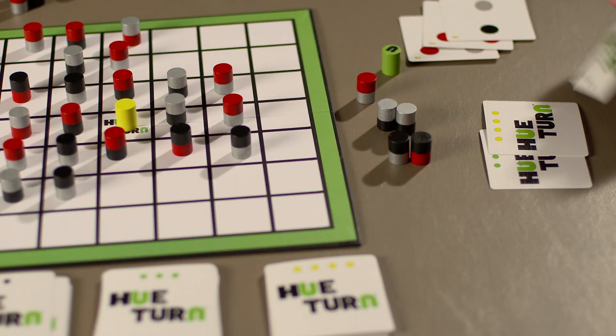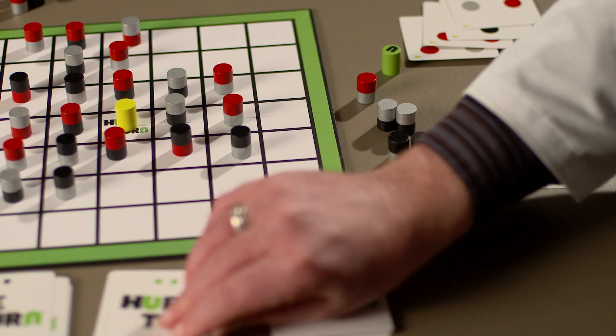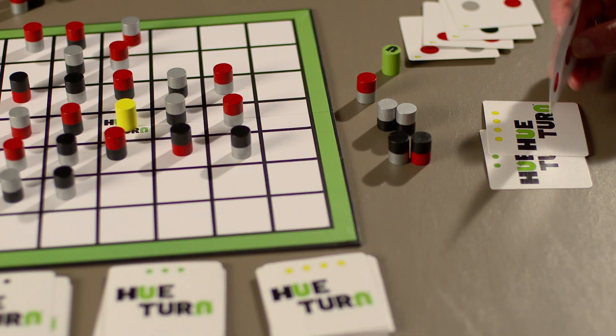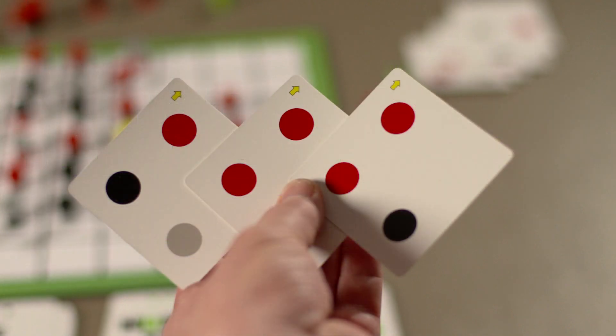At the end of your turn, refill your hand to three cards by drawing from any of the piles. You do not have to replace a card of the same value as the one you just played, but don't take on more challenge than you can handle. It can be difficult to complete any patterns if your hand is full of hard four peg patterns.